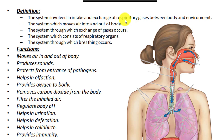The second definition: the system which moves air into and out of the body is called the respiratory system. These arrows on screen show the movement of gases inside the body and the path for exhalation. The third definition: the system through which exchange of gases occurs is called the respiratory system.